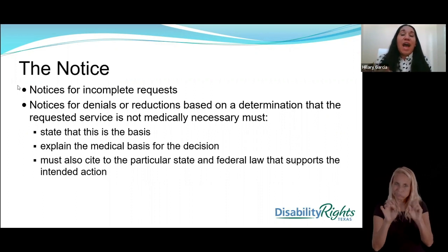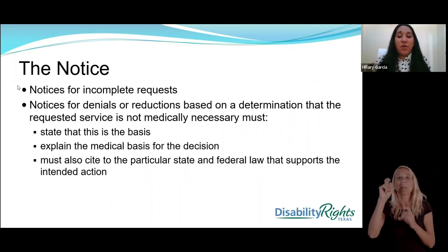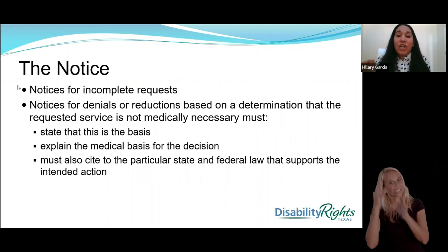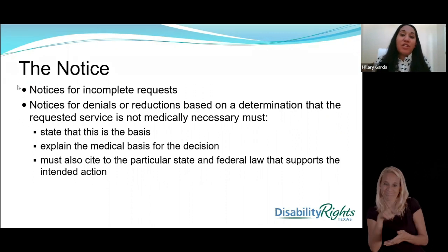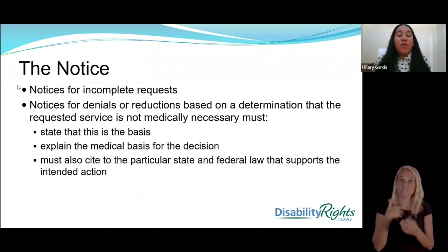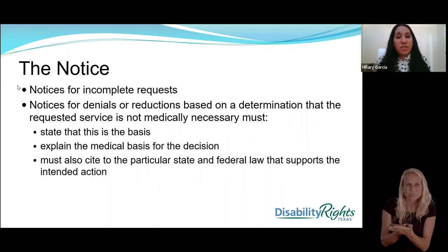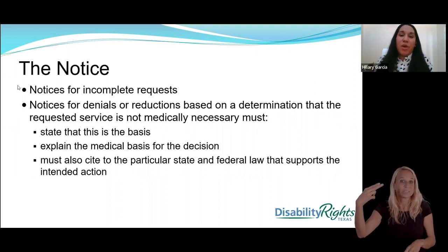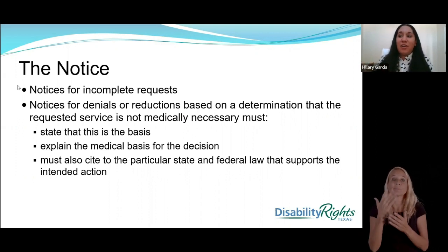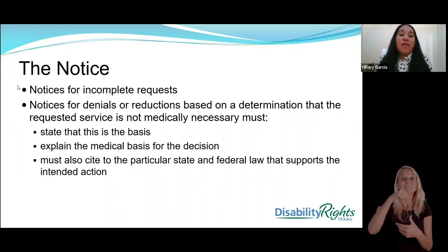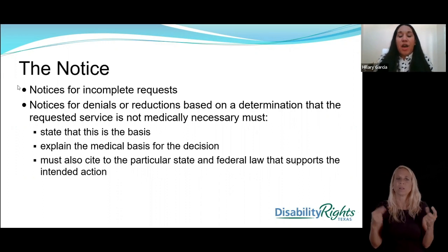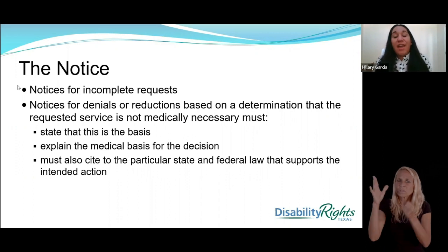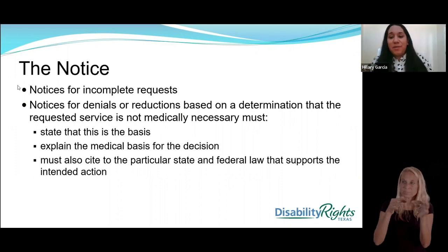They do have to cite either state or federal law, or the policy that supports their decision. You also have the right to request that information from your health plan, from the Health and Human Services Commission, or the Texas Medicaid Healthcare Partnership — whichever party is sending you the denial notice. You have the right to ask for the policy that supports their decision, and it will also mention that in your denial notice.